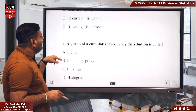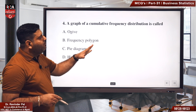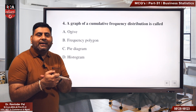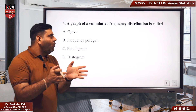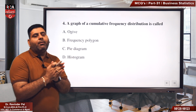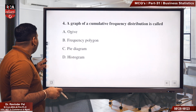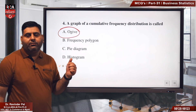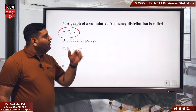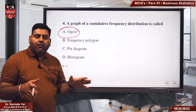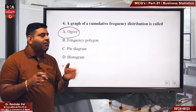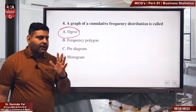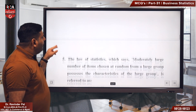Fourth question — a simple one. When we draw a cumulative frequency distribution on graph paper, what is it called? It is called an Ogive curve. When we draw a diagram of cumulative frequency (CF), that diagram is called an Ogive. You need to learn this.